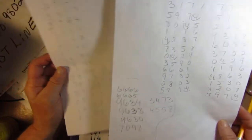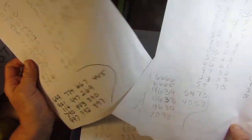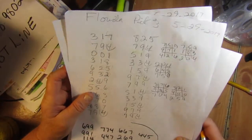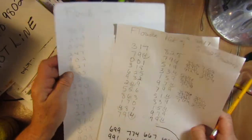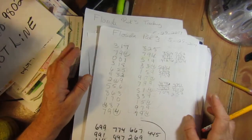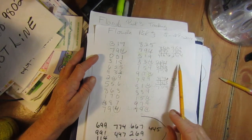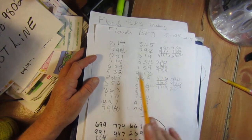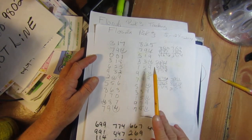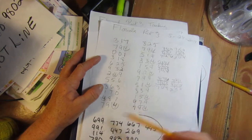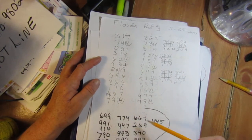Alright and on pick three. Okay the last draw was 794. I did the 317 workout, 825 workout and these are all the numbers that I got for tonight. This is for Florida.